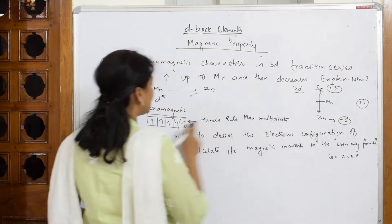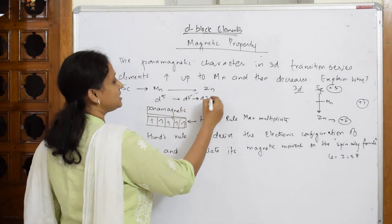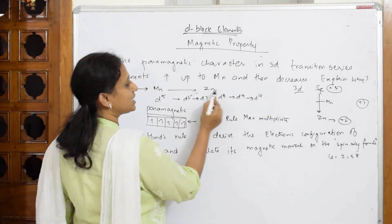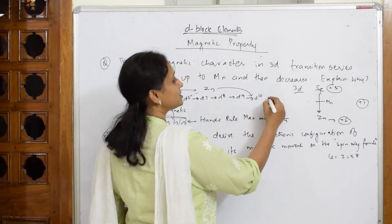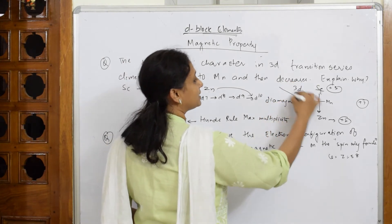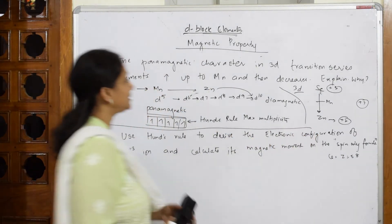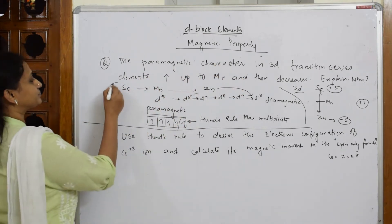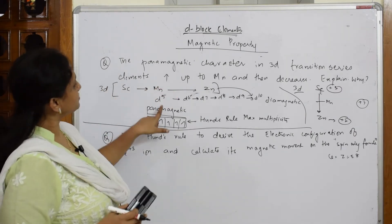After d5, the configuration goes d6, d7, d8, d9, and finally d10 at zinc. When zinc reaches the d10 configuration, it is completely filled and becomes diamagnetic in nature. So in the 3d series, paramagnetic character increases up to manganese and then decreases.